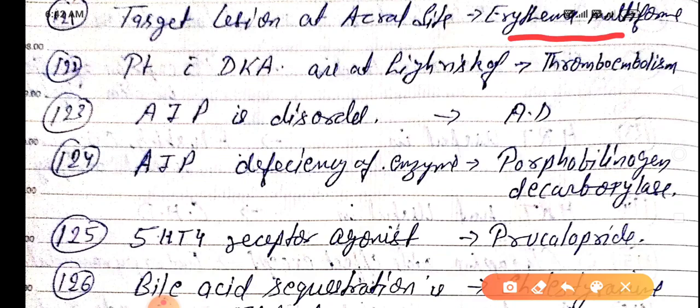Patients with DKA — diabetic ketoacidosis — are at high risk of thromboembolism. So in DKA, firstly we have to give subcutaneous heparin to prevent the risk of thromboembolism.